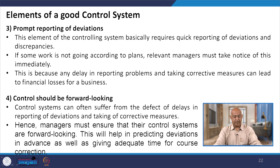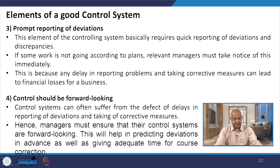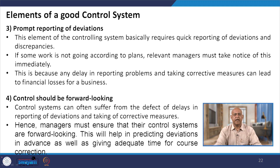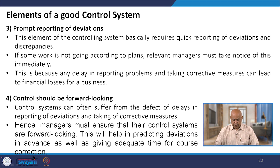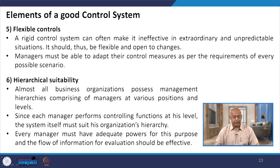Control systems should be forward-looking. Control systems can suffer from delays in reporting deviations and making corrective measures, so managers must ensure their control systems are forward-looking and help predict deviations in advance, giving adequate time for course correction. On this basis, control will be most effective.